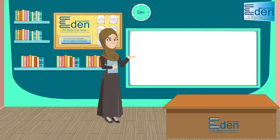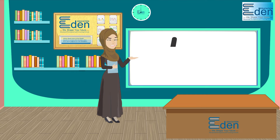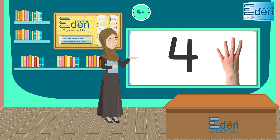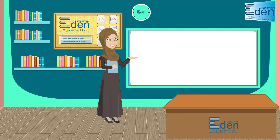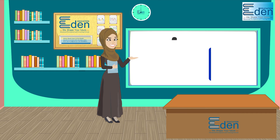How can we show the number four? Let's find out. I see four fingers. I see four circles.